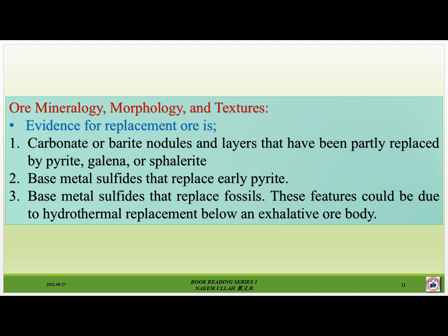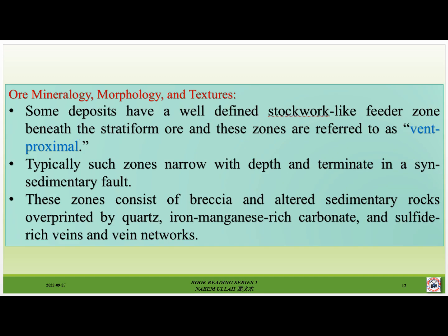Evidence for replacement ore includes: number one, carbonate or barite nodules and layers that have been partly replaced by pyrite, galena, or sphalerite; number two, base metal sulfides that replace early pyrite; number three, base metal sulfides that replace fossils. Some deposits have a well-defined stockwork-like feeder zone beneath the stratiform ore body. These zones, referred to as vent-proximal, typically narrow with depth and terminate in a syn-sedimentary fault, consisting of breccia and altered sedimentary rocks cut by quartz, iron-manganese-rich carbonate, and sulfide-rich veins.